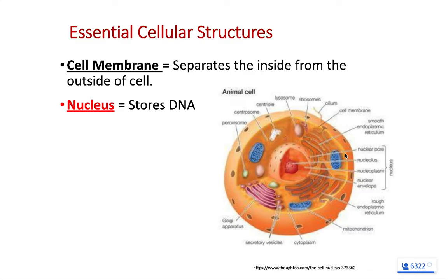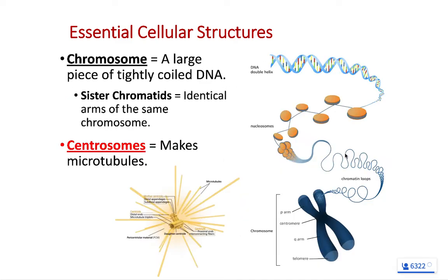As we look at the cell, we have a cell membrane on the outside and a nucleus on the inside that stores the DNA. Within the nucleus, we have DNA. If the DNA is loosely coiled, we call it chromatin; when that DNA is tightly coiled around itself, we recategorize it as a chromosome.